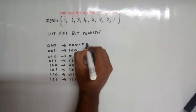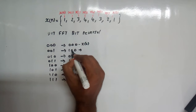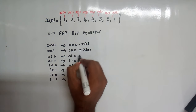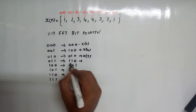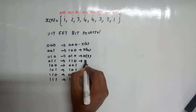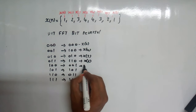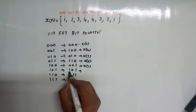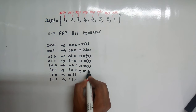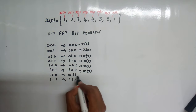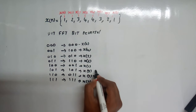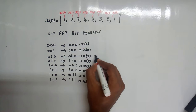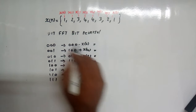So this is x(0) itself, this is x(4), then 010 is x(2), 4+2=6 so that is x(6), x(1), then 4+1=5 so x(5), 2+1=3 so x(3), and x(7). We need to start with this order for DIT-FFT.